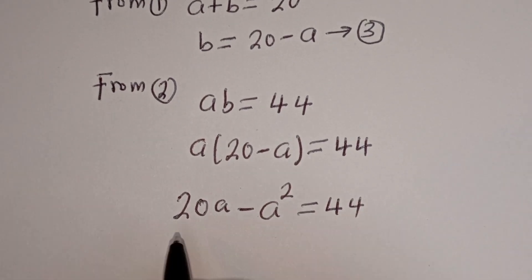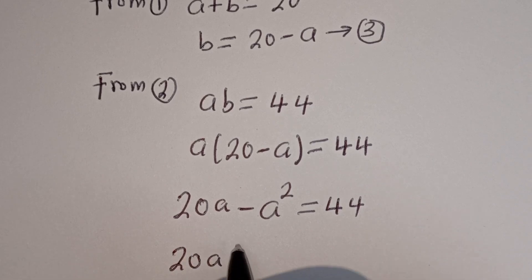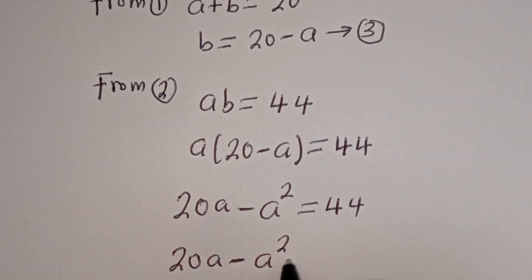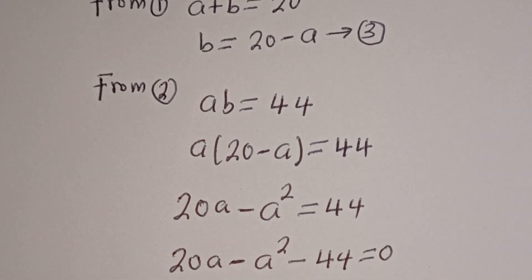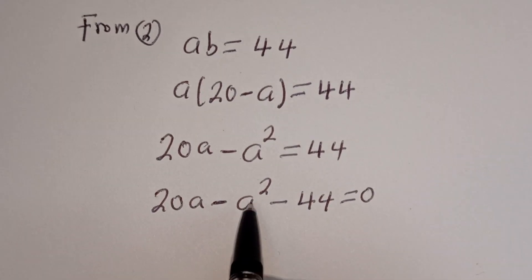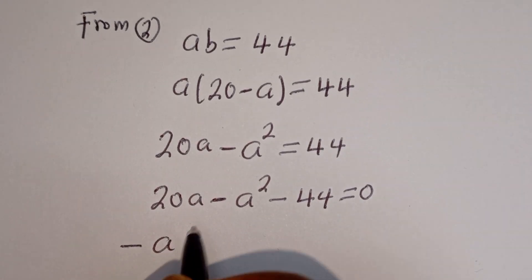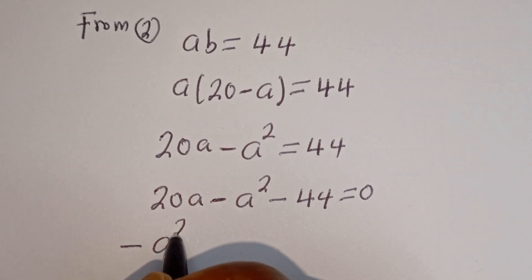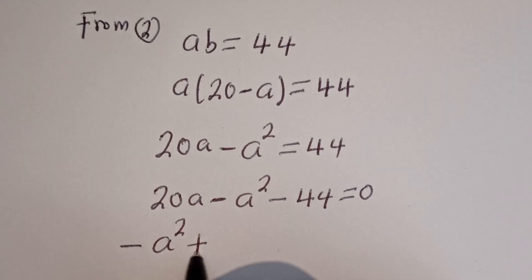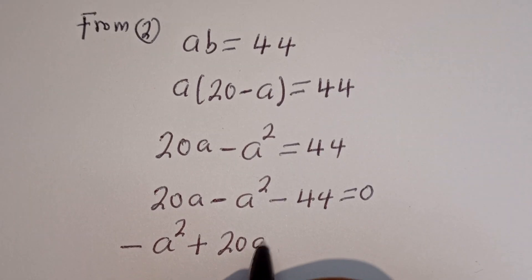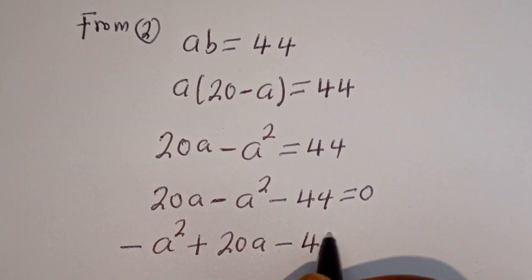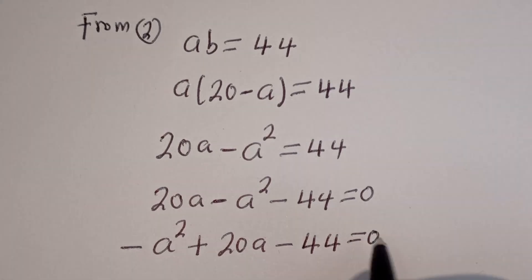Then here we have 20a minus a squared minus 44 is equal to 0. Let's rearrange this in standard form: we have minus a squared plus 20a minus 44 is equal to 0.